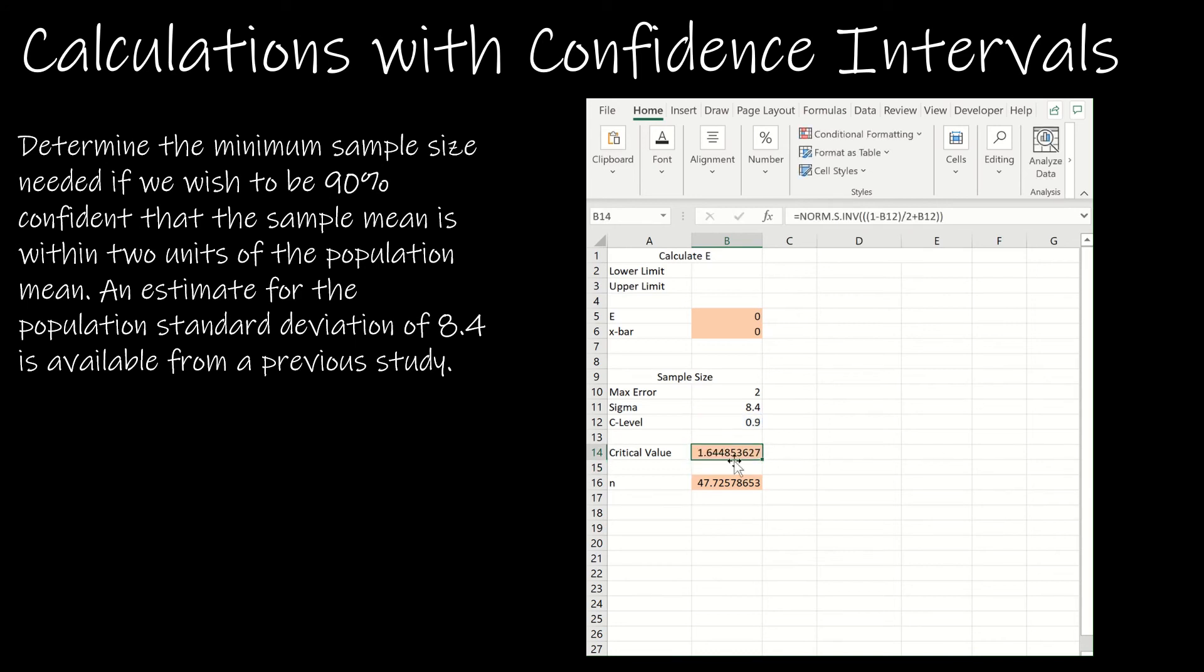And notice what I've done is, just as I did before, if it was 0.9, it gave me 0.9 plus half of whatever was left over after I subtracted 0.9 from 1. So really, it's norm s inverse of 0.95. And then this is just that formula that we came up with together. So I'm taking the critical value multiplied by the standard deviation of the population and dividing it by E and then squaring it.